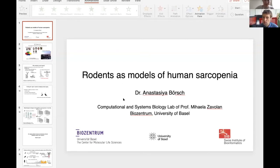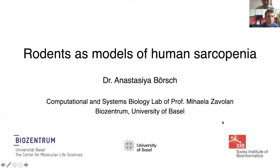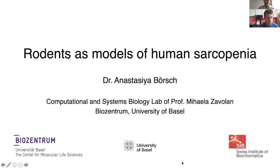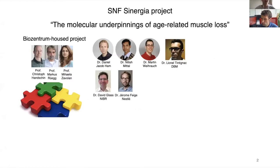Sarcopenia is a disease where we observe degenerative loss of skeletal muscle, typically in older people. Good afternoon, my name is Anastasia Bursch and today I will present the comparative analysis of skeletal muscle aging in rodents and humans.